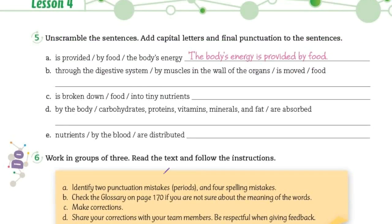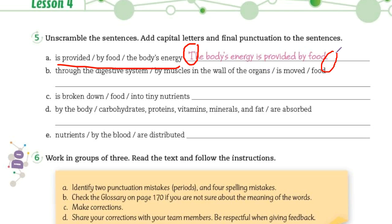Activity number five: unscramble sentences. Add capital letters and final punctuation to the sentences. Entonces aquí está una oración pero está desordenada — la tienen que ordenar. En este caso ya la ordenaron: 'The body's energy is provided by food.' Además de ordenarla, recuerden que una oración empieza con capital letter, and at the end we have to add a period — al final tenemos que agregar el punto final. Lo mismo van a hacer en las demás.